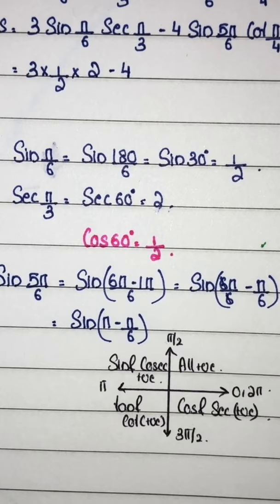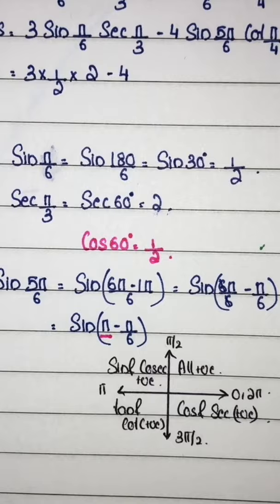π minus π by 6, π in the second quadrant on the x axis, so function change. This equals sin π by 6.